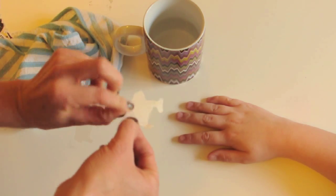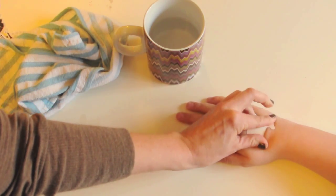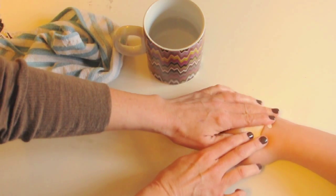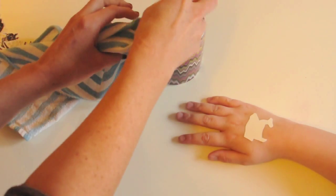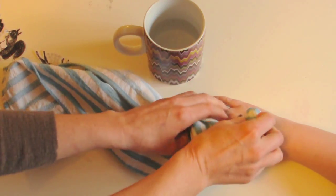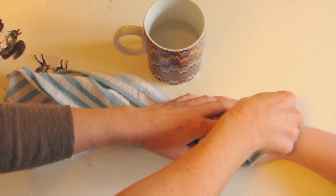And then put the tattoo where you want it. And then take some rag or paper towel, and just get the paper wet, and it will come off once it's wet.